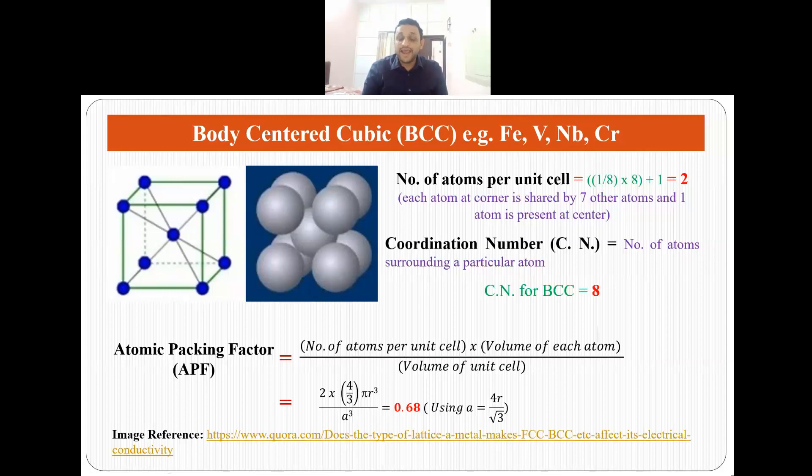Then comes the concept of atomic packing factor or how much fraction of the unit cell is occupied by the atoms. It is given by number of atoms per unit cell times volume of each atom upon volume of unit cell. Number of atoms per unit cell in BCC structure is 2. Volume of each atom is 4/3 pi r cubed and volume of unit cell is a cubed where a is the dimension of the unit cell.